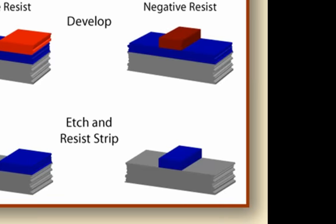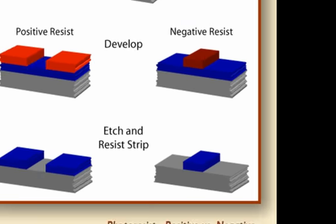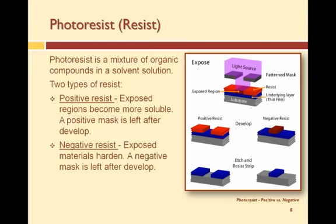With negative resist, the regions of the resist exposed to UV light become insoluble and hardened. When developed, the hardened resist remains on the wafer and the non-exposed resist dissolves, resulting in a negative resist pattern on the wafer. In microsystems fabrication, the majority of resist used is positive resist.